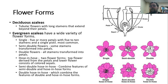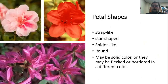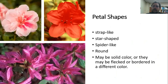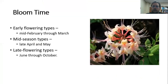You have a lot to pick from and can have real diversity in your landscape. In addition to flower form, you also have diversity in petal shapes — from strap-like or star-shaped to spider-like with long thin petals, or round. There is also diversity in flower color, with varieties that are solid, flecked, or bordered with other colors, ranging all the way from whites to reds, yellows, oranges, and deep purples.